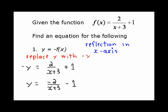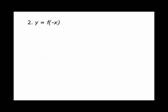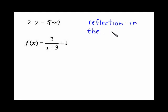I'll bring up a new screen. Same equation to start with. Now I want to go f at negative x. Here's our graph that we started with. I'm going to make a note that this is a reflection in the y-axis. Anytime you replace x with negative x, you get a reflection in the y-axis.